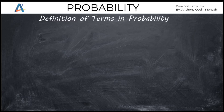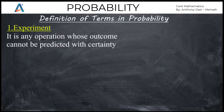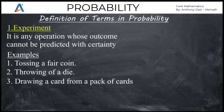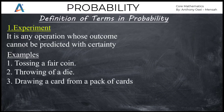The first term is experiment. An experiment is any operation whose outcome cannot be predicted with certainty. Examples of experiments include: number one, tossing a fair coin; number two, throwing a die; number three, drawing a card from a pack of cards. An experiment means that whatever you are about to do is not predictable — you cannot tell the outcome in advance. In all these examples, the outputs are not certain.